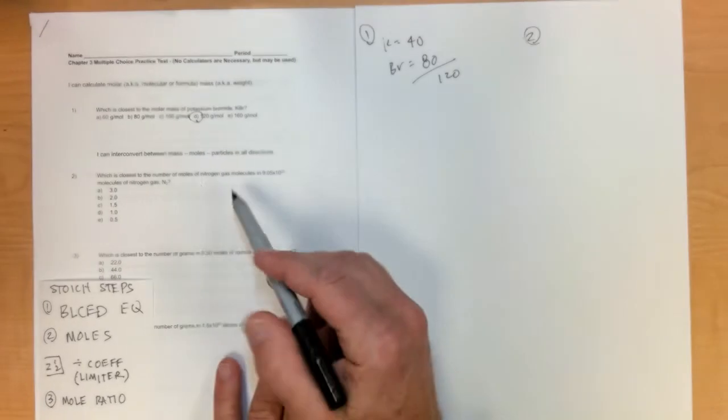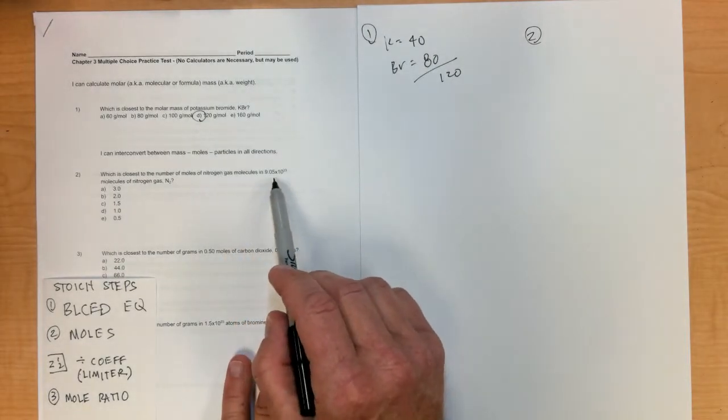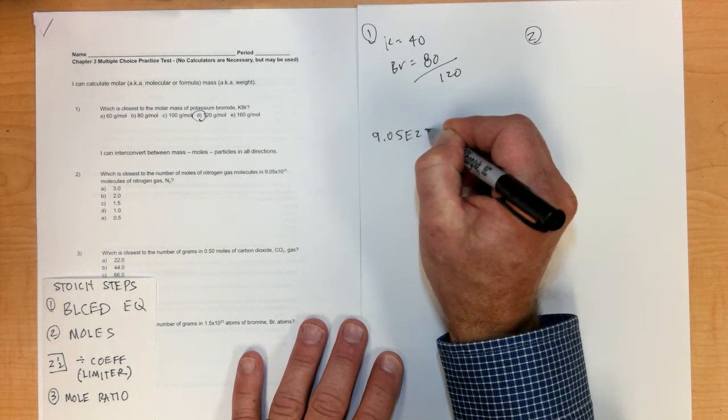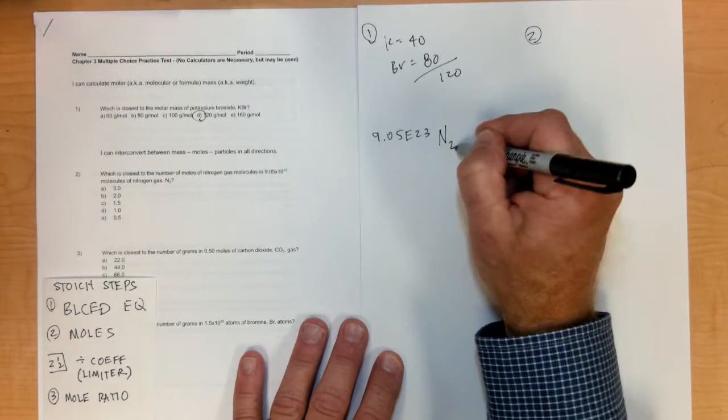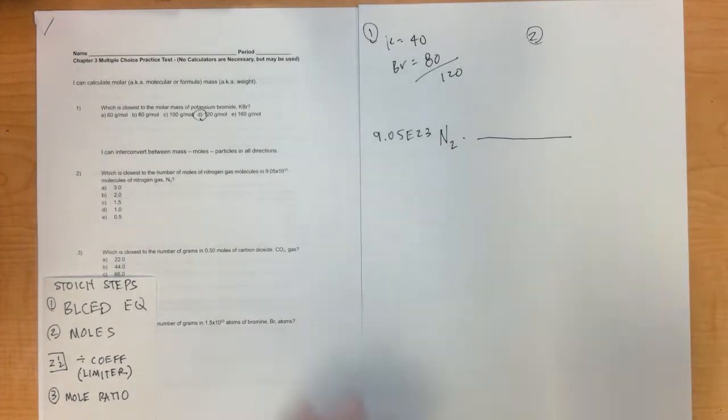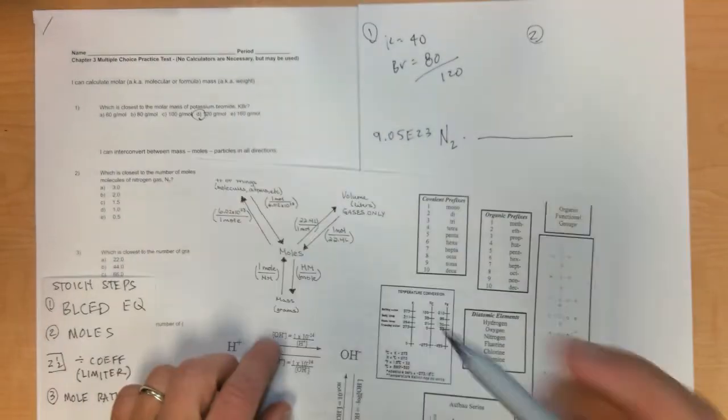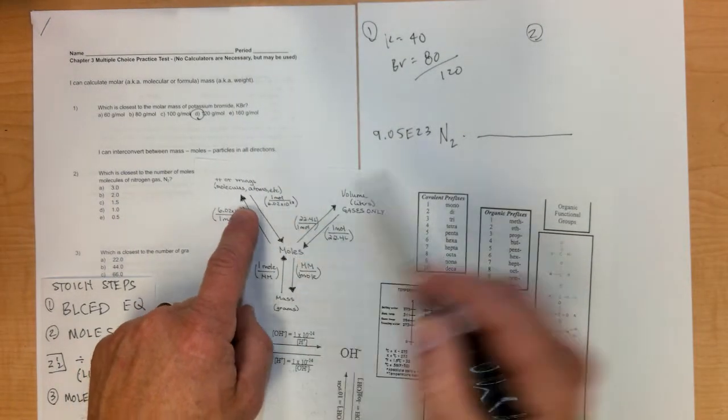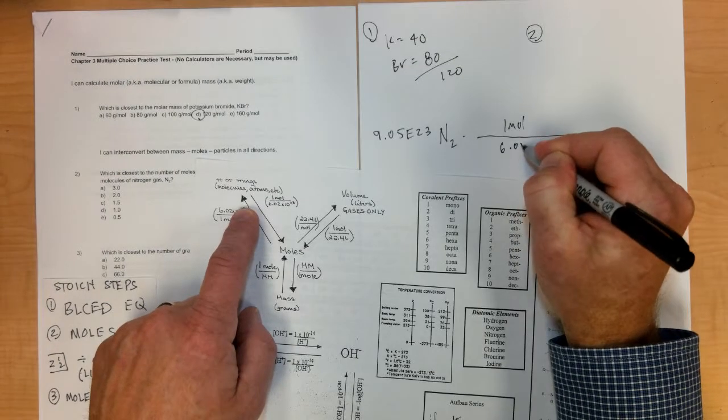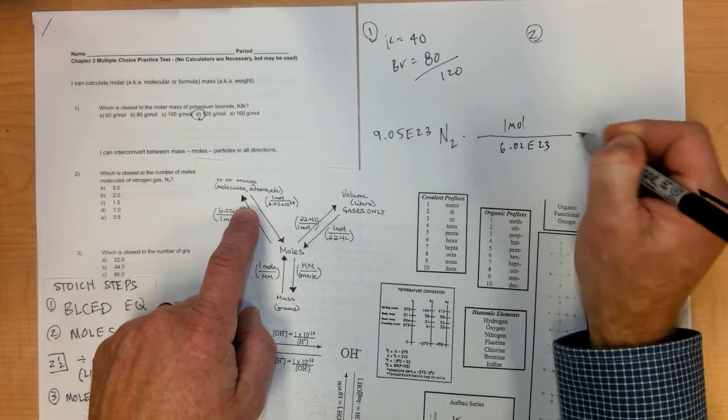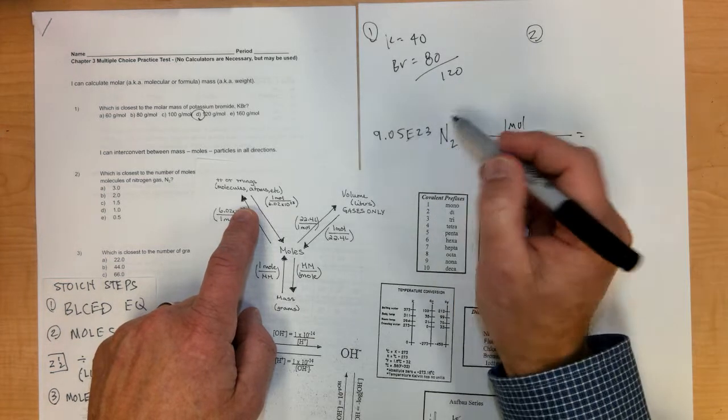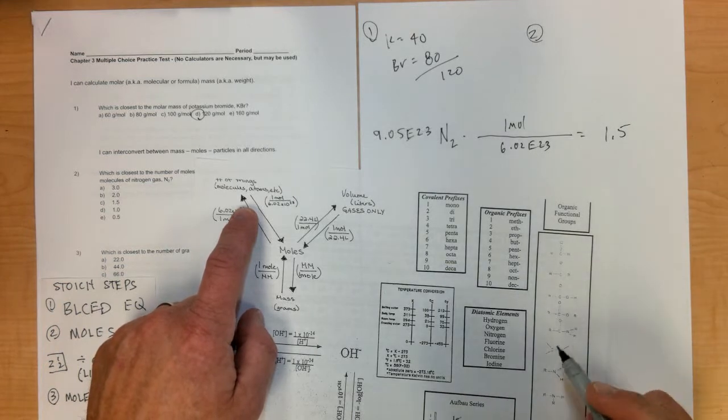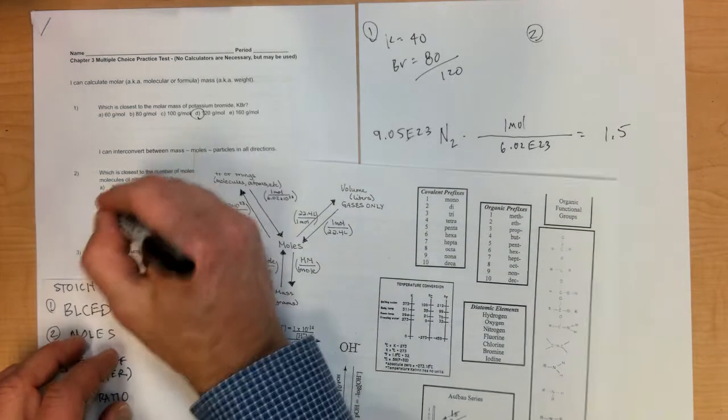Number two: which is closest to the number of moles of nitrogen molecules in 9.05 times 10^23 molecules of nitrogen gas N2? It wants to know the number of moles, so we go from molecules to moles. One mole on top, 6.02 times 10^23 on the bottom. The 10^23 cancels. 9 divided by 6 is about 1.5, so about 1.5 moles, which is letter C.